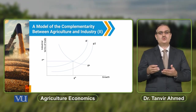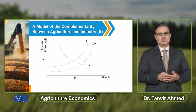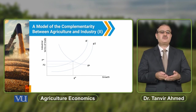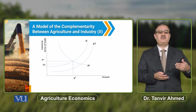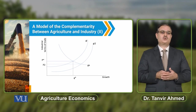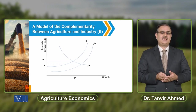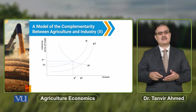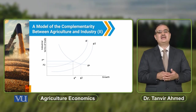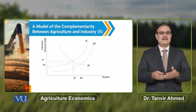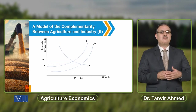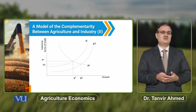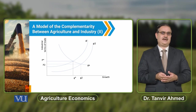The GI curve moves from GI to G2. As a result, the terms of trade with reference to the industrial sector will deteriorate, while growth in the agricultural sector will increase. There is an increase in industrial growth, but at the expense of the terms of trade.